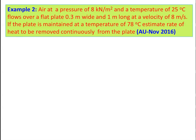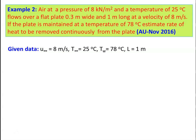Example 2: Air at a pressure of 8 kPa and a temperature of 25°C flows over a flat plate 0.3 m wide and 1 m long at a velocity of 8 m/s. The plate is maintained at 78°C. Estimate the rate of heat to be removed continuously from the plate. Given: U∞ = 8 m/s, T∞ = 25°C, Tw = 78°C, L = 1 m, W = 0.3 m.